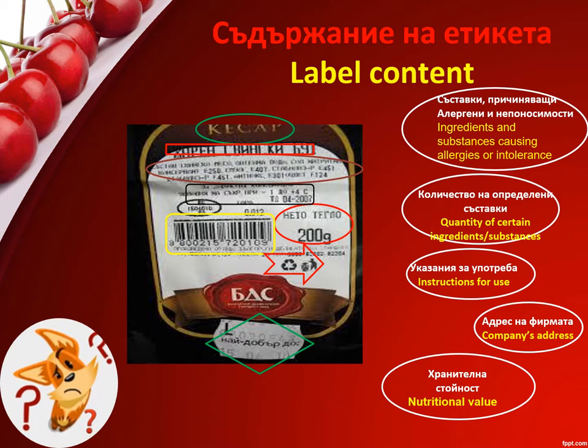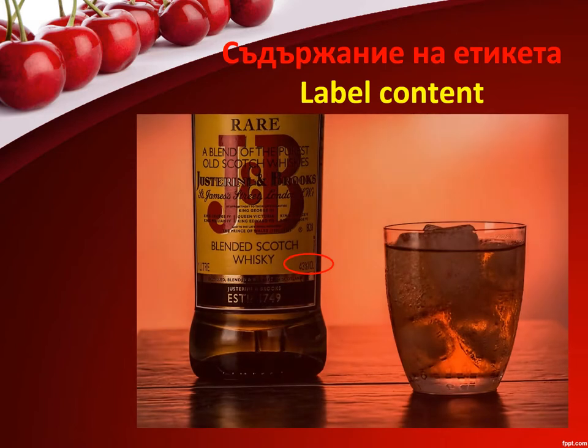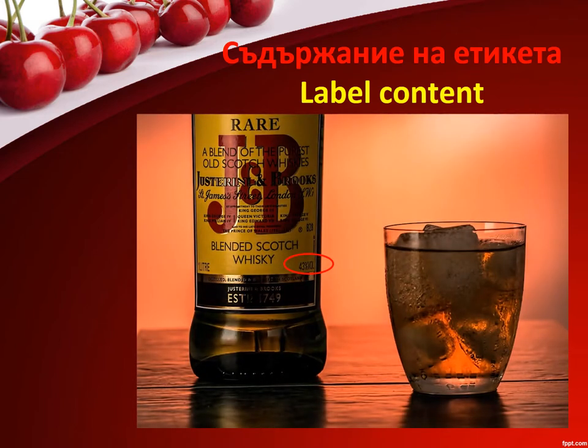The minimum shelf life or expiry date must be printed on the package and not additionally glued, as shown on the label on the slide. Other required components include special conditions of storage or use, and the name, trade name and address of the business entity in the food industry.